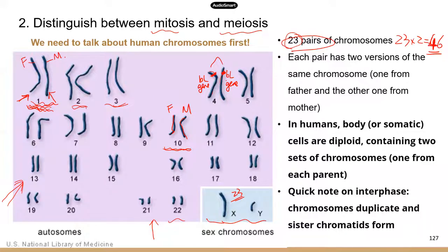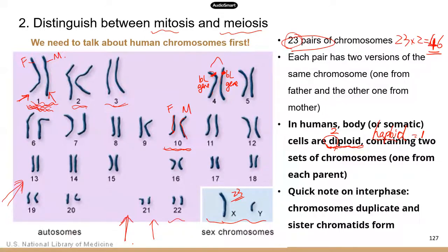I want to mention some important terms quickly: diploid and haploid. Diploid — 'di' means two. Haploid means one. For the cell shown here, which has two copies for each chromosome, this cell is diploid because it has two copies of chromosomes for each type. For chromosome 21 there are two copies — one from the father, one from the mother. For chromosome 22, there are two copies. So that's a diploid cell.